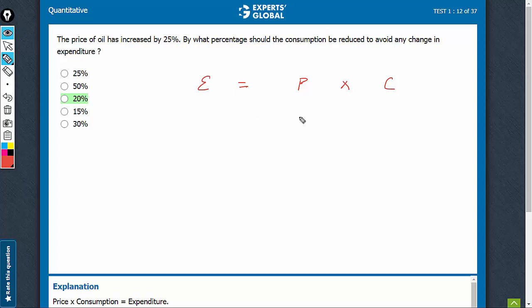So, let's assume that initially the price was, say, $1 and the consumption was 100 units. So, the expense was $100.